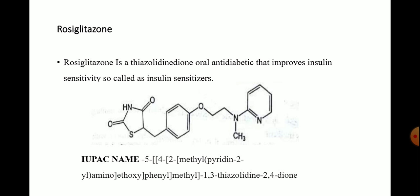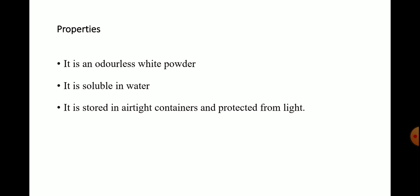The next drug is rosiglitazone. Rosiglitazone is a thiazolidinedione oral anti-diabetic that improves insulin sensitivity, so it is called an insulin sensitizer. This is the structure of rosiglitazone. Its properties: it is an odorless white powder, soluble in water, and should be stored in an airtight container protected from light.